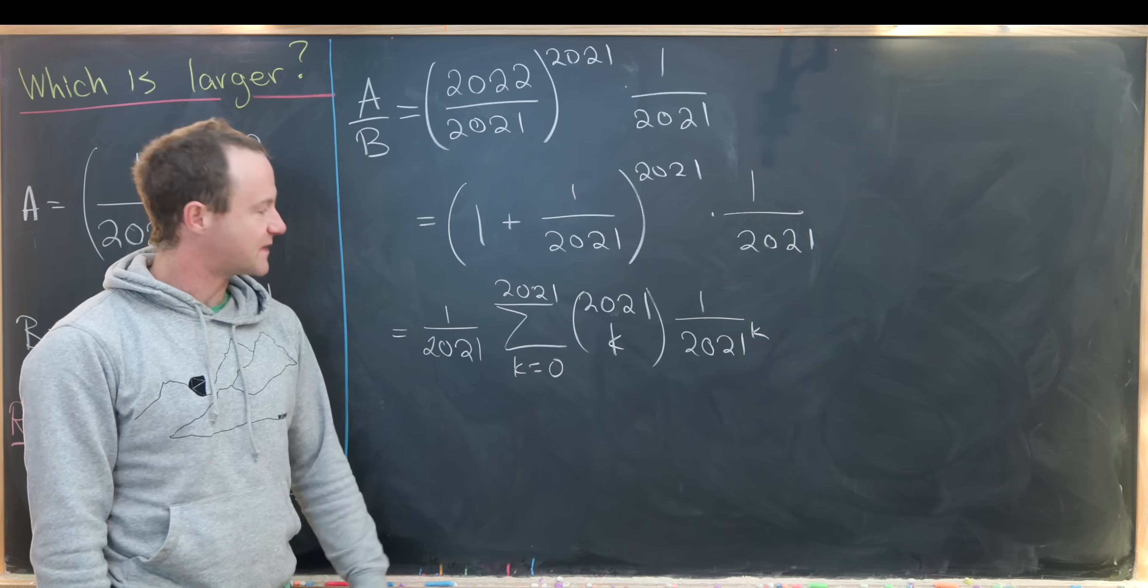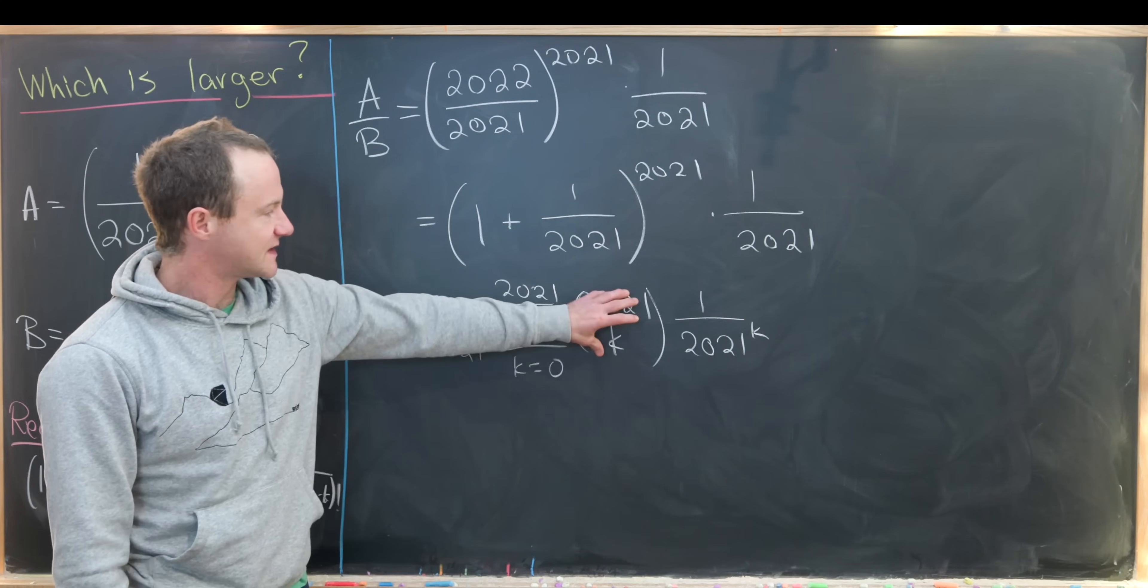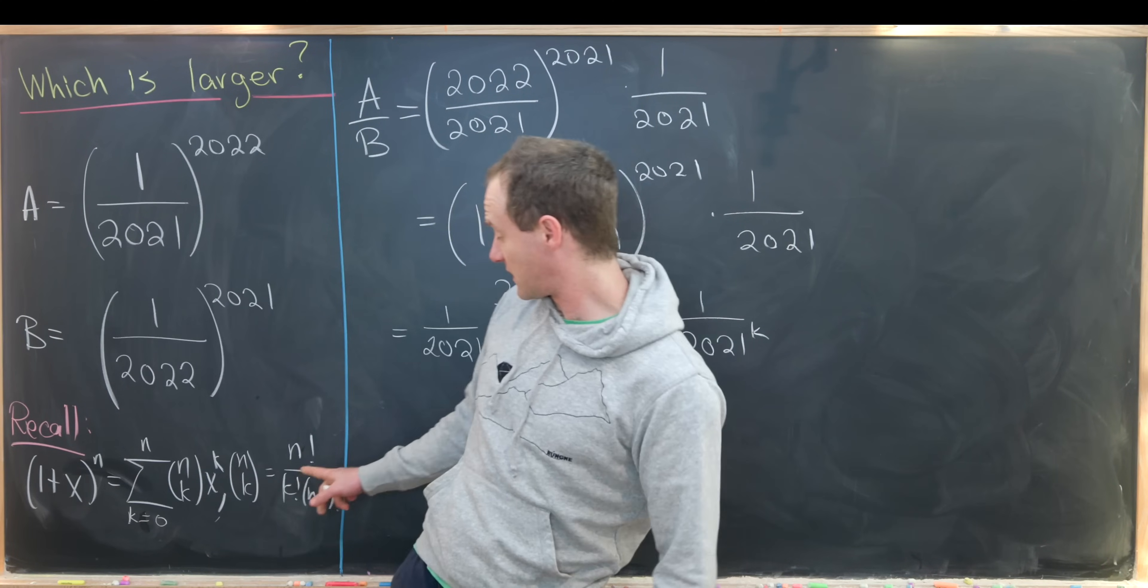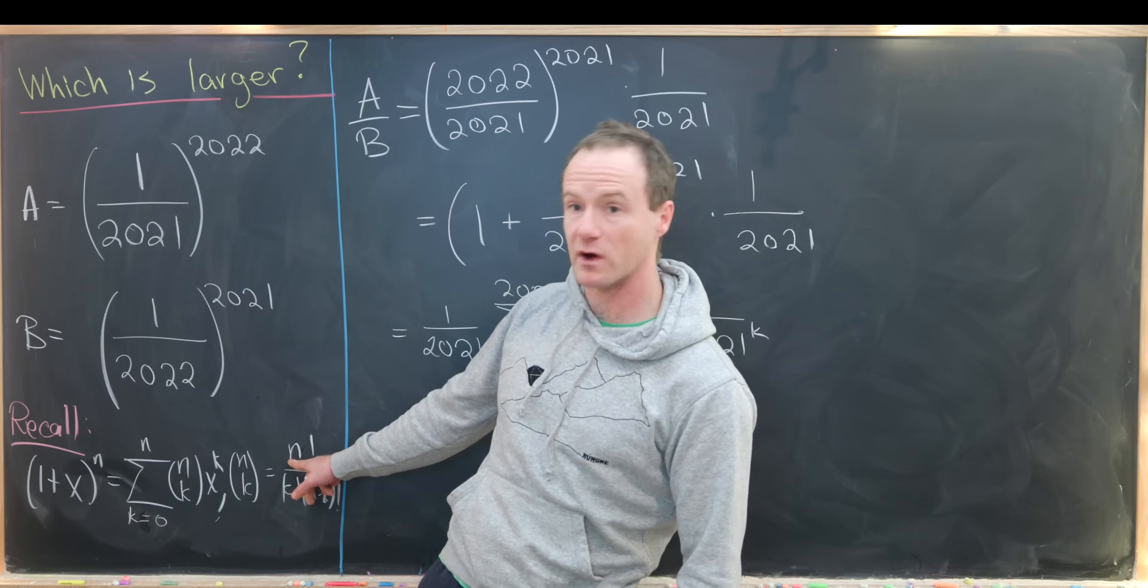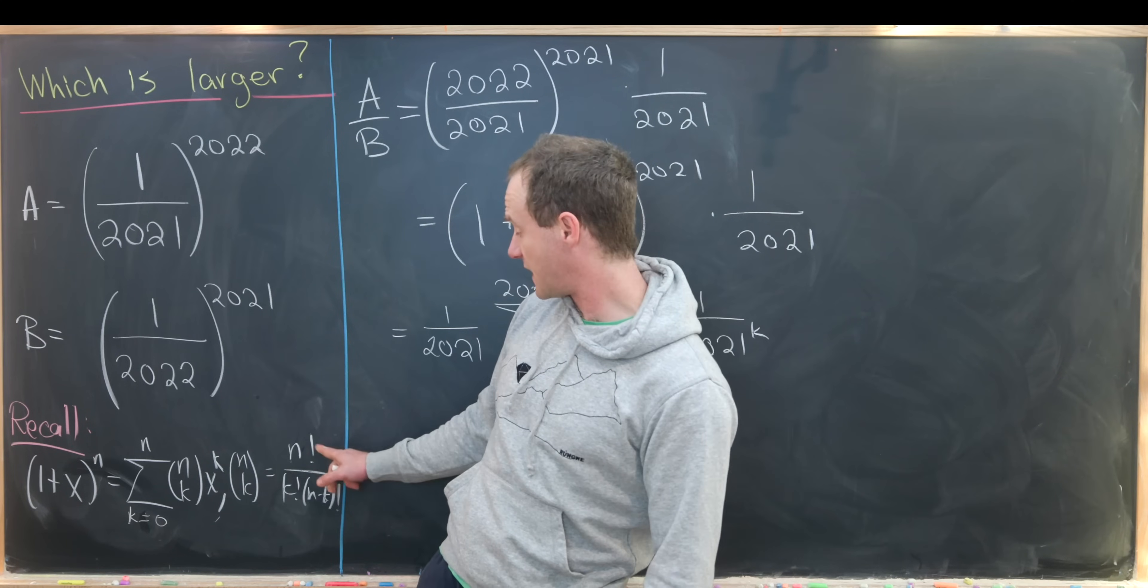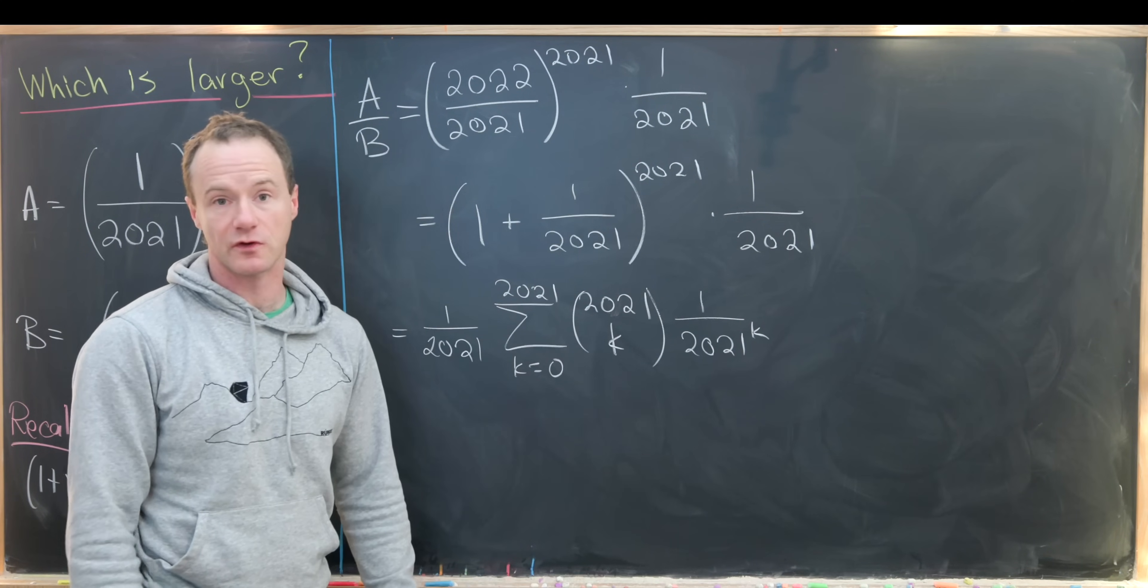Now we look at this and some things jump out. Notice that this binomial coefficient is definitely less than 2021 factorial given that 2021 factorial is occurring in the numerator.